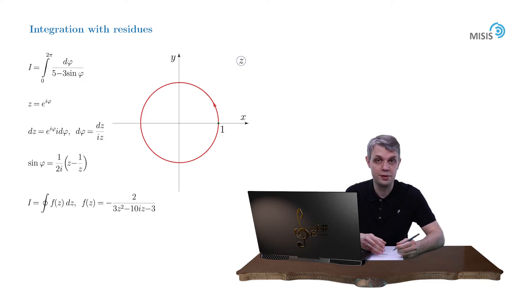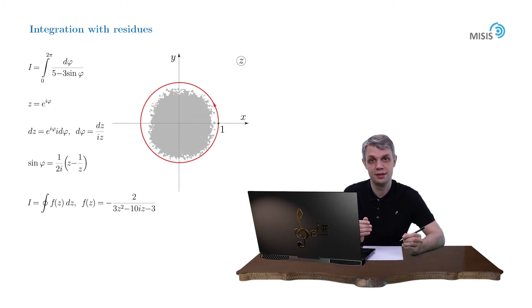Now we can use Cauchy Residue Theorem to compute this closed contour integral. It's equal to 2πi times the sum of the residues inside our contour. The region inside stays to the left as we move along our contour in the counterclockwise direction, so our region inside is simply the unit disk.